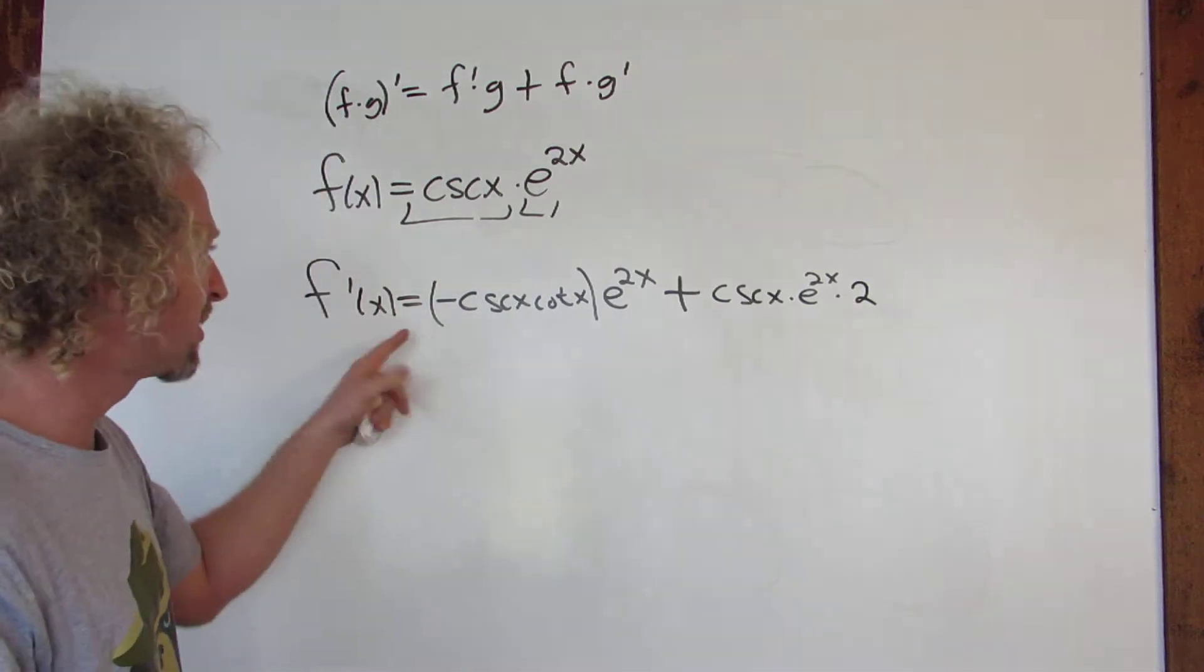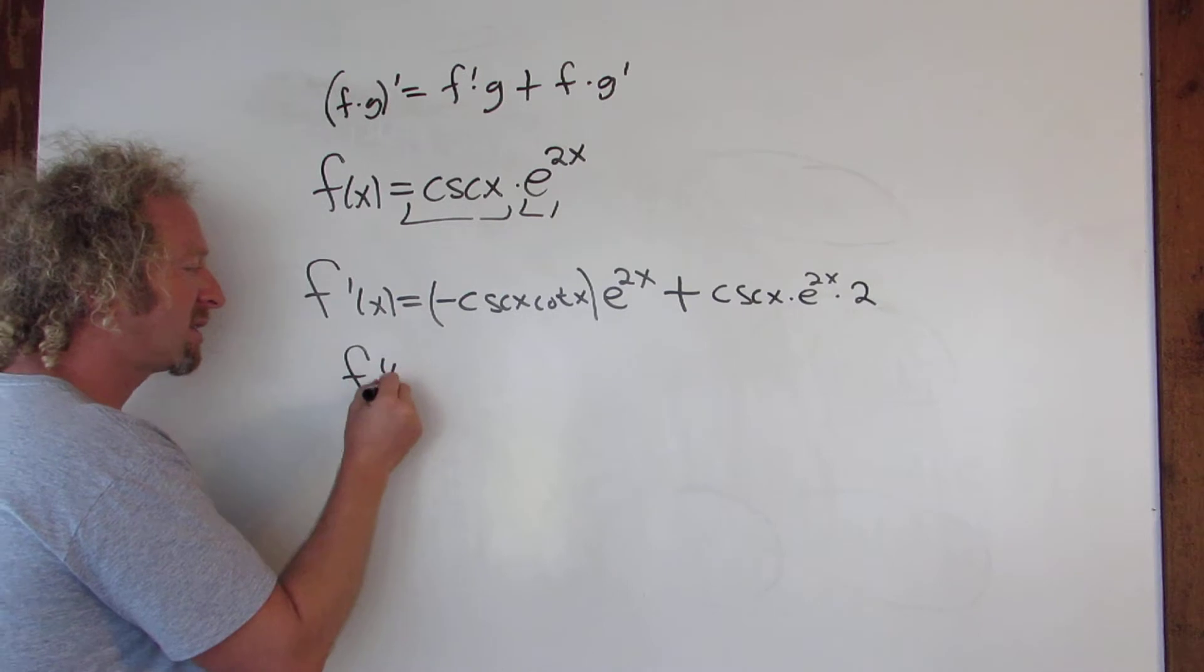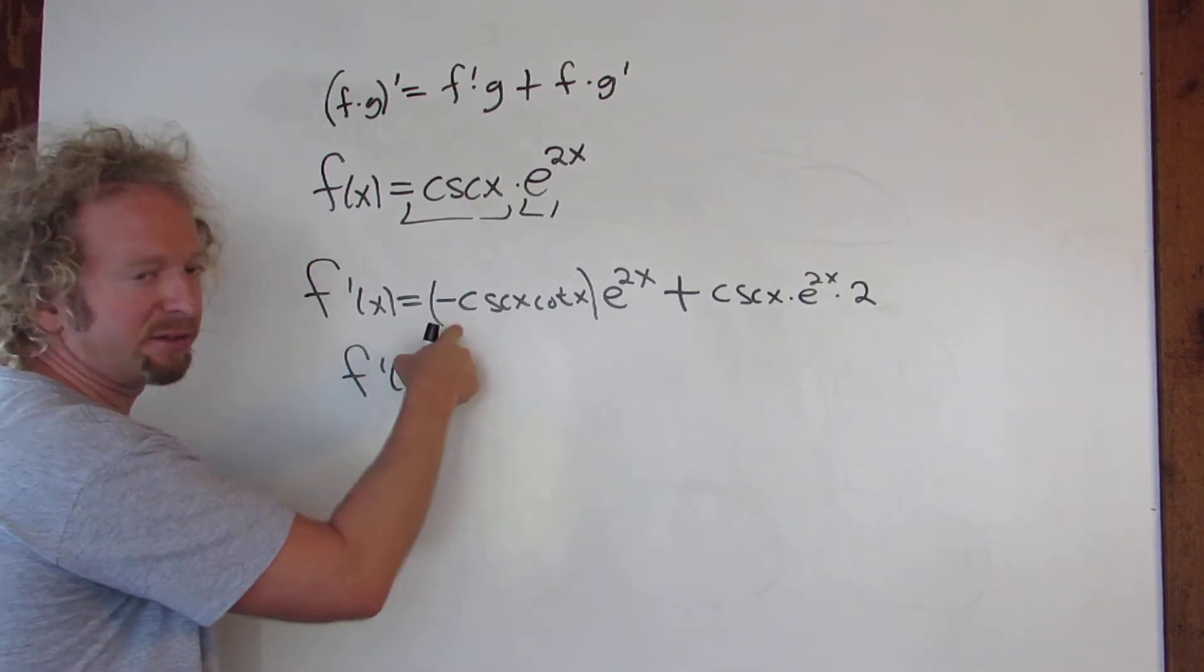The last thing to do is just clean it up. Maybe erase this parenthesis, put the 2e over here in the front. So f prime of x is equal to—I'm also going to put the e in the front—so negative e to the 2x.